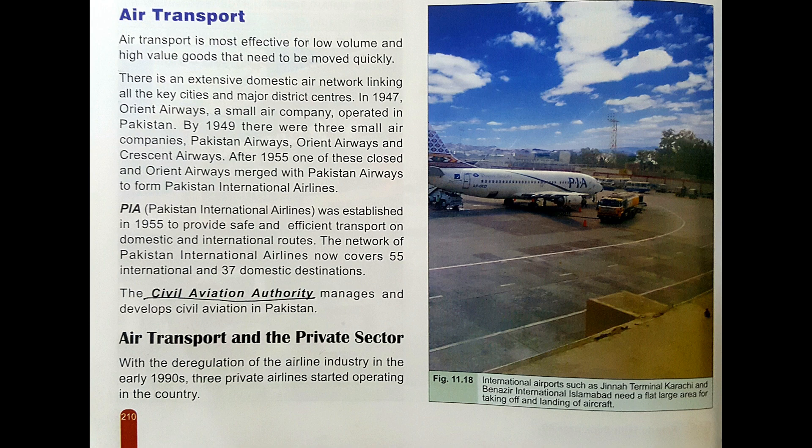In Pakistan, we have an air network linking all the key cities and major districts. In 1947, Orient Airways, a small air company, operated in Pakistan. Only one small air company was working here and that was Orient Airways. By 1949, there were three small airways: Pakistan Airways, Orient Airways and Crescent Airways.